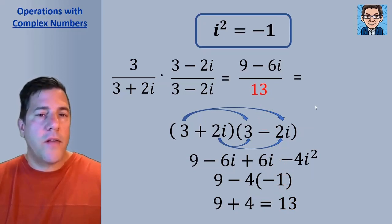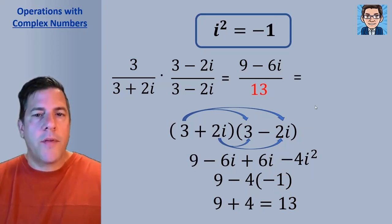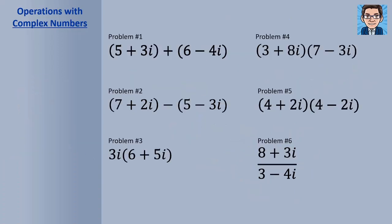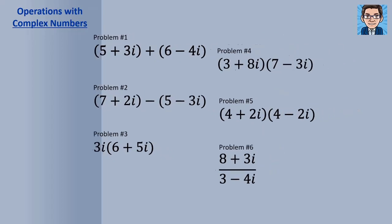To do the final simplification step, we split the result into two parts: the real part over 13 and the minus 6 over 13i. Now let's look at six examples of doing operations with complex numbers.